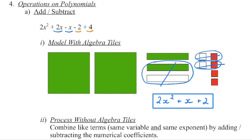Algebraically, we combine like terms by adding or subtracting the numerical coefficients. The x squared term is the only one with x squared, so it stays as 2x squared. For the x terms, which are like terms because they share the same variable and same exponent of 1, we get 2 minus 1 which is 1x. The exponent stays the same — it is only the coefficient we are adding or subtracting. And then negative 2 plus 4 is positive 2. If you don't have algebra tiles, just combine like terms by adding or subtracting the numerical coefficients.